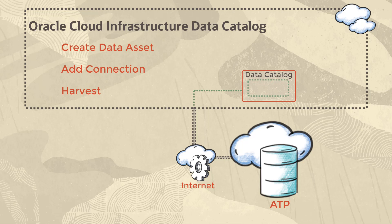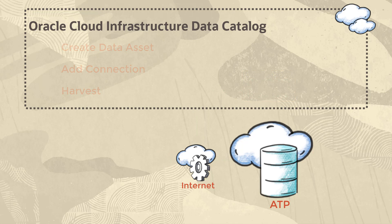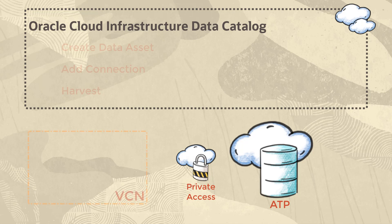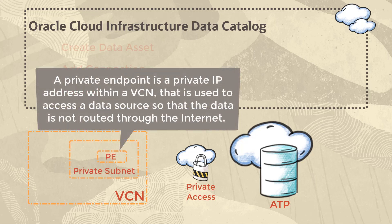Consider a scenario where you don't want your autonomous transaction processing database to be accessible over the Internet using public IPs. Oracle Cloud Infrastructure provides options to configure private access to this autonomous database by creating a virtual cloud network or VCN, a private subnet, and a private endpoint. A private endpoint is a private IP address within a VCN that is used to access a data source so that the data is not routed through the Internet.